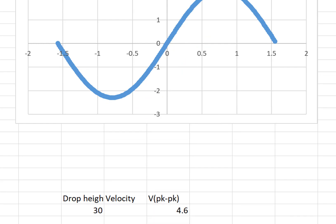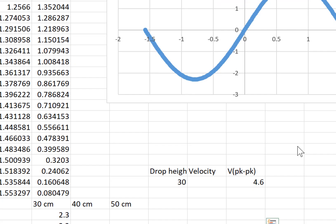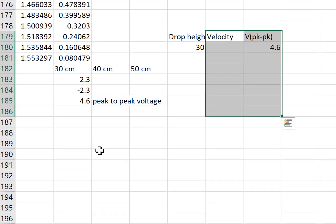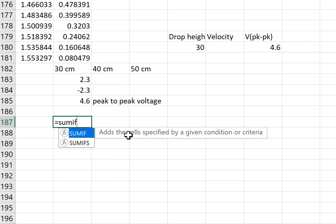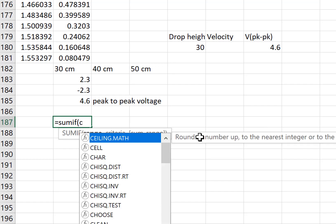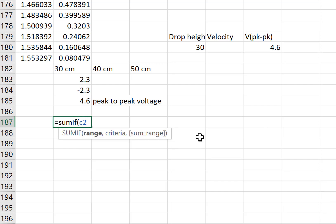We kind of have to play a trick with Excel to get it to do the absolute value because it's not easy just to take the absolute value. So I'm going to go underneath my column C, that's my data for this drop height, and put an equal sign and tell it to sum if the range I want is C2 to C181.